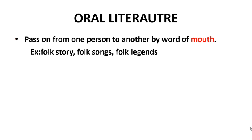Oral literature is passed from one person to another by word of mouth. Examples include folk stories, folk songs, and folk versions. Just like our grandmothers tell us stories, these are transferred to us and then to future generations through oral tradition. Before they were written down, texts like the Vedas were transferred from one generation to another by word of mouth through small hymns.